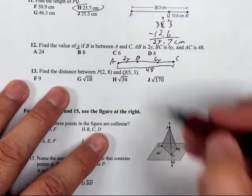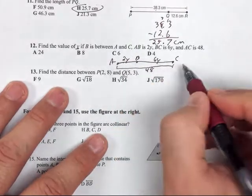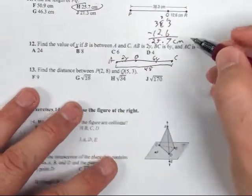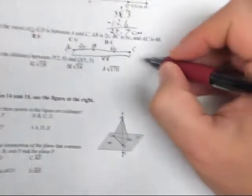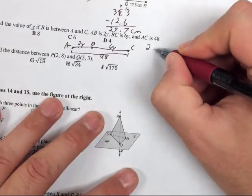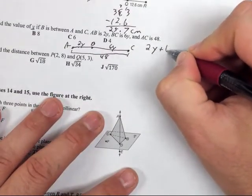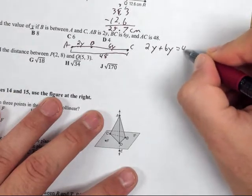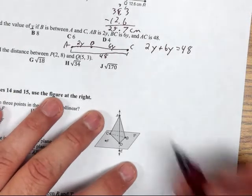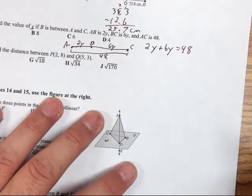Now remember our formula here is to do the left side plus the right side equals the whole thing. So we've got 2Y plus 6Y equals 48. Left plus right equals whole.